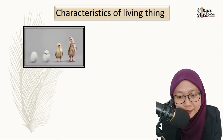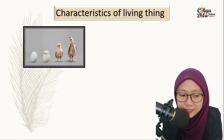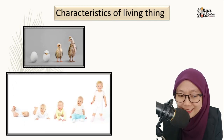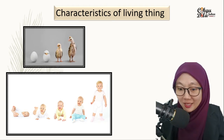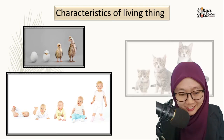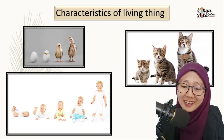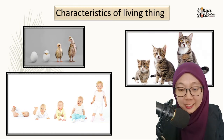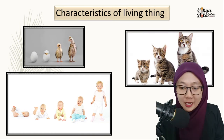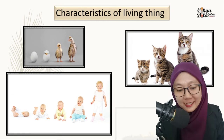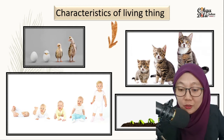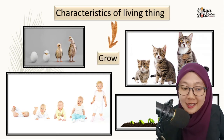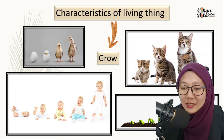Another characteristic of living things: you can see there is an egg that turns into a chicken, a baby that grows up to become a boy, a very cute little kitten that grows up and becomes a cat, and a plant growing up. So what we can conclude here is that living things grow.